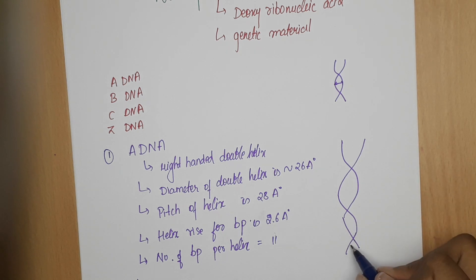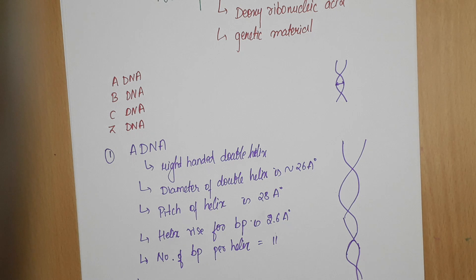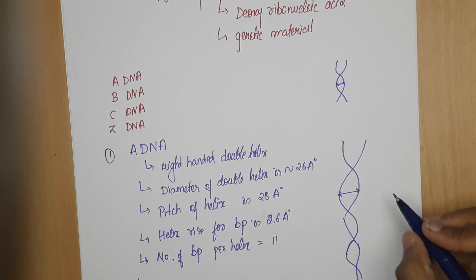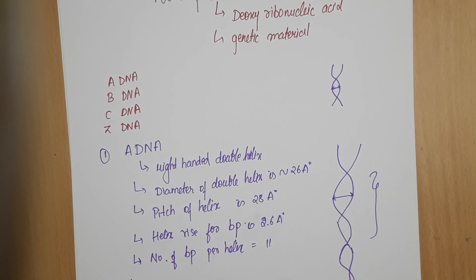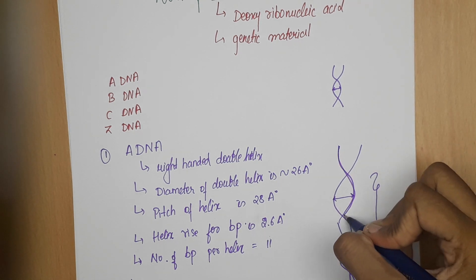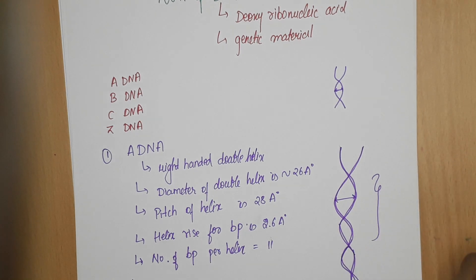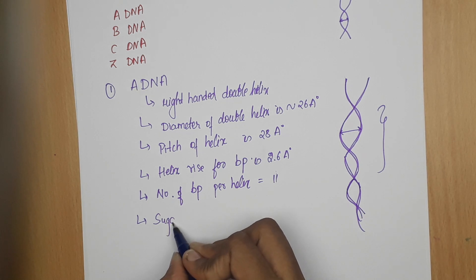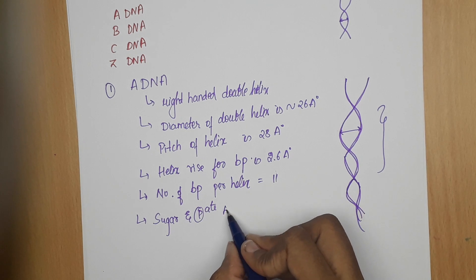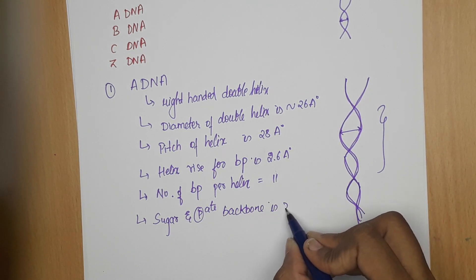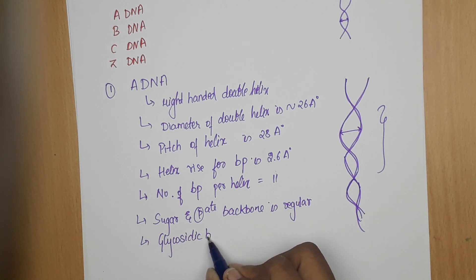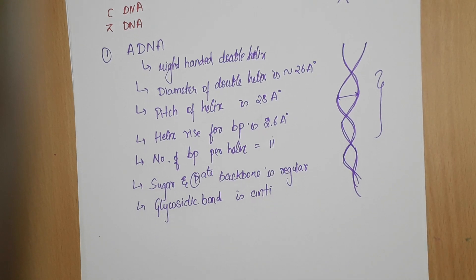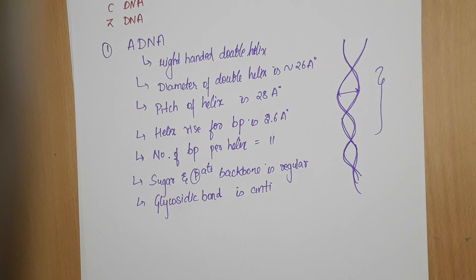This is the structure of A-DNA. This is the diameter, and this helix consists of 11 base pairs. These strands are made up of sugar and phosphate. The sugar and phosphate backbone is regular, and the glycosidic bond — the bond between the sugar and nitrogenous bases — is in the anti conformation.